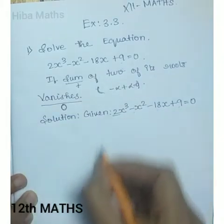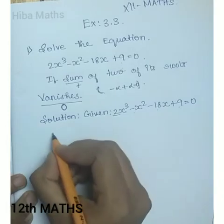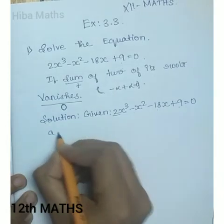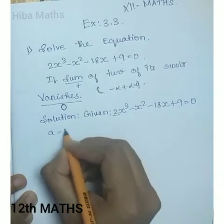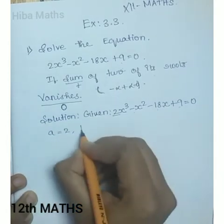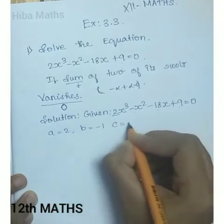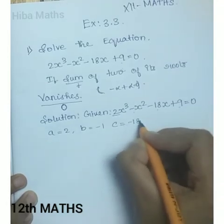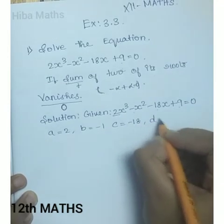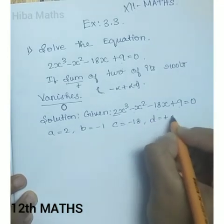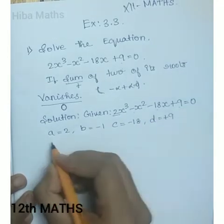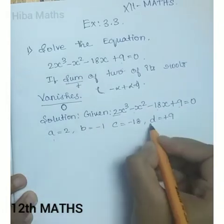So a = 2, b = -1, c = -18, and d = +9. We will use the values of a, b, and d.